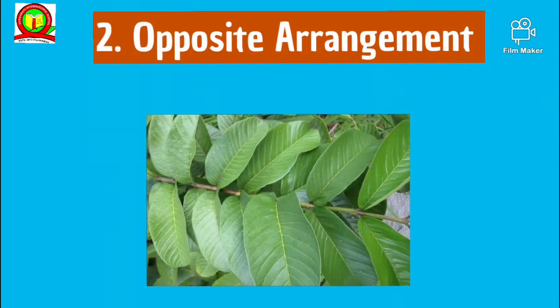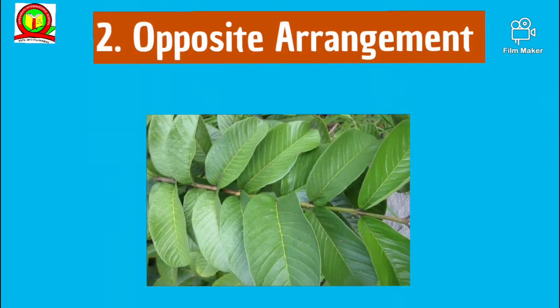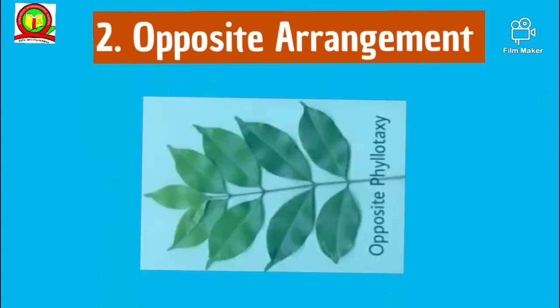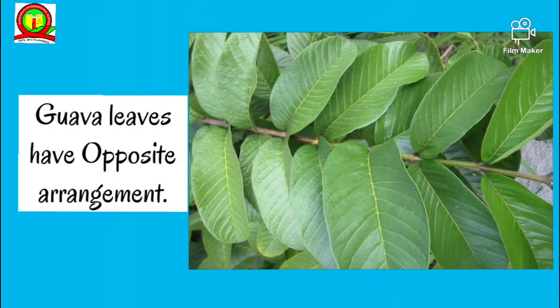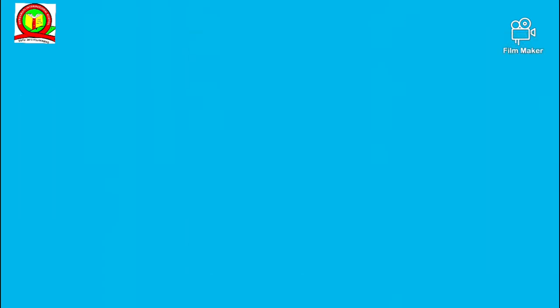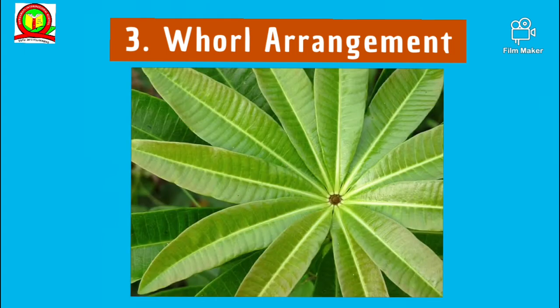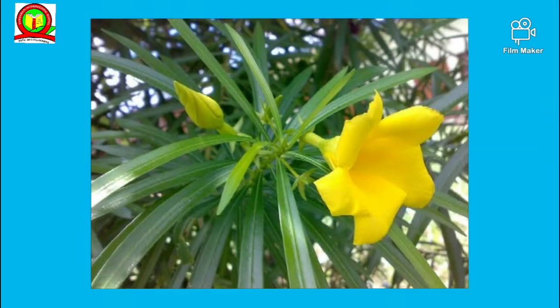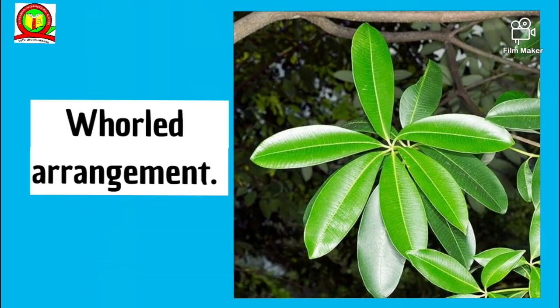The second type is opposite arrangement of leaves: two leaves arise at each node, opposite to each other, for example the guava leaves. The third arrangement is whorled arrangement of leaves: more than two leaves arise at each node and are arranged in a whorl or circle, for example in the asparagus or oleander leaves.